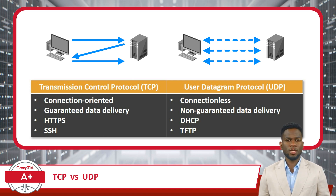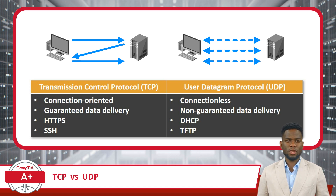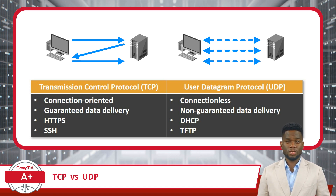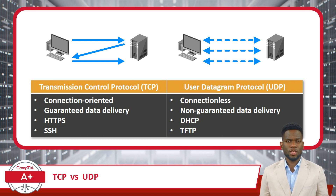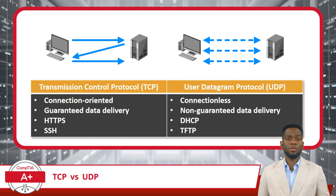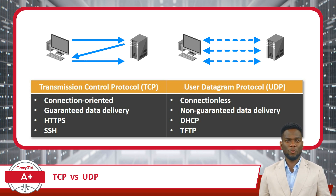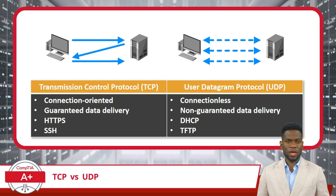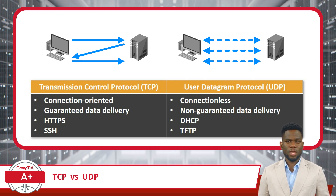UDP operates in a connectionless manner, where data is sent without establishing a connection, leading to non-guaranteed delivery. This is suitable for applications where speed is more critical than reliability, such as DHCP for network configuration and TFTP for simple, quick file transfers. Understanding these differences is crucial in choosing the right protocol for specific networking tasks, balancing the trade-offs between reliability and efficiency.